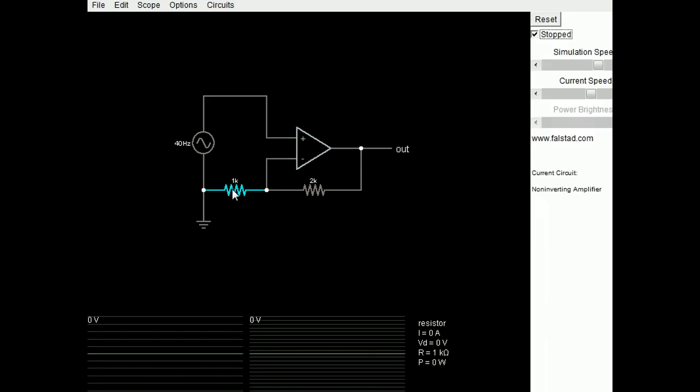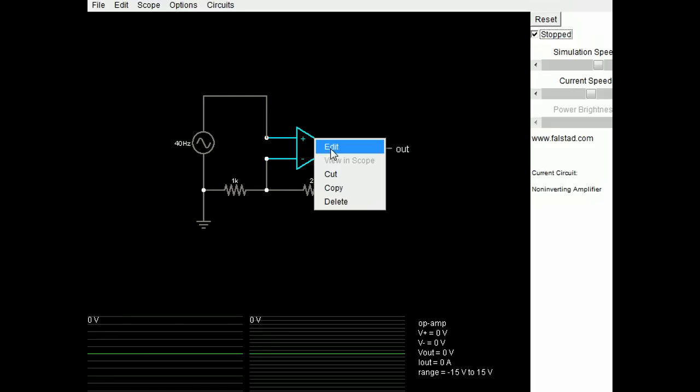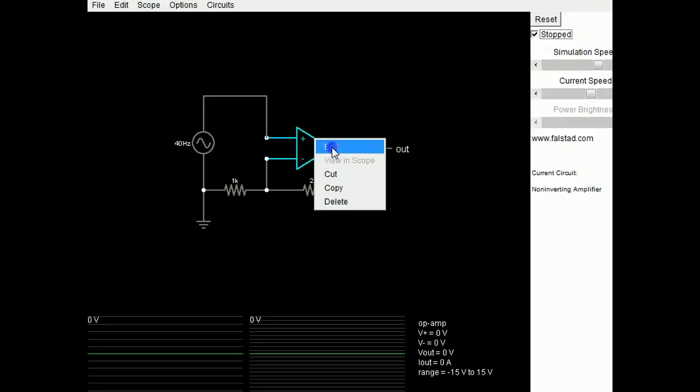Here's our input resistance. These have values of 2k and 1k. We can change the parameters of our circuit. Highlight by hovering over the object and right-click. Or on a Mac, it's command-click or control-click, I believe. So we just edit.